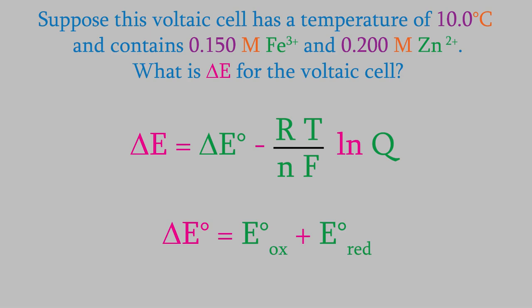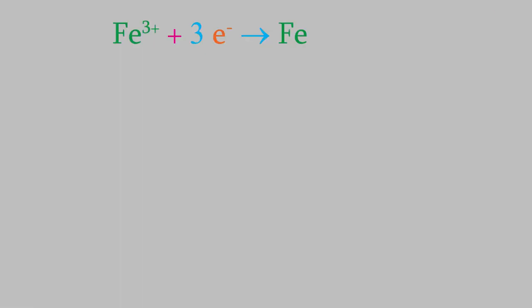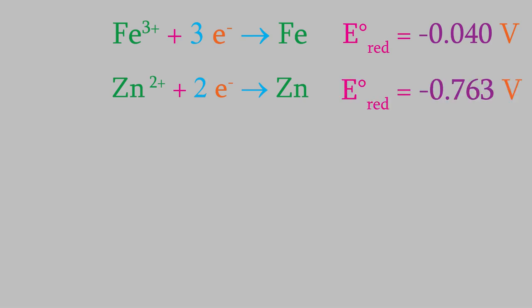The first thing we'll need is delta E°, so we'll need to use this equation. We use appendix E to look up the standard reduction potentials of the two half reactions. The reduction reaction with iron has a reduction potential of negative 0.040 volts, and the reduction reaction with zinc has a potential of negative 0.763 volts.